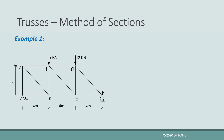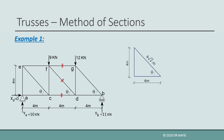Now let us look at an example. For the shown truss, we need to evaluate the internal forces in the marked members using the method of sections. As a first step, we evaluate the reactions. Next, because we need to work with the X and Y components of inclined forces, we need to find their angle of inclination. In this problem, all inclined members have the same angle of inclination, which is evaluated to be 45 degrees.